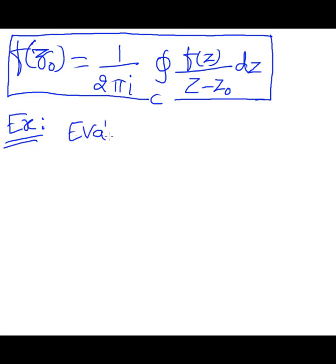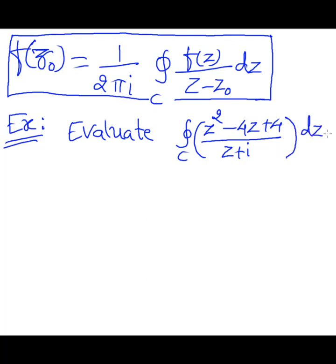The problem is: Evaluate the integral over C of (z²-4z+4)/(z+i) dz, where C is the circle |z|=2.